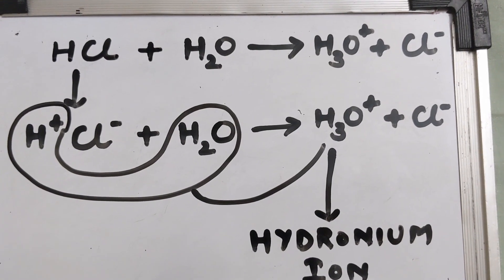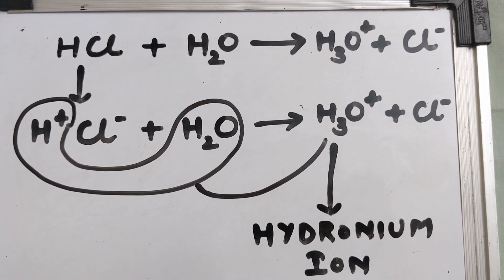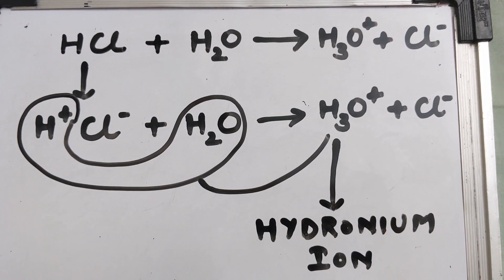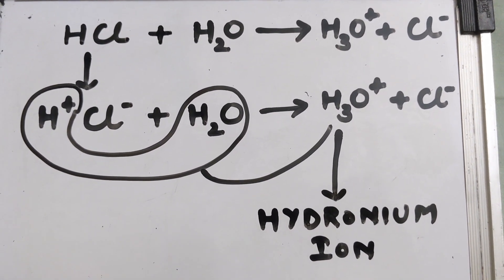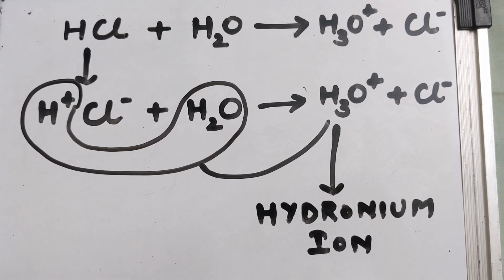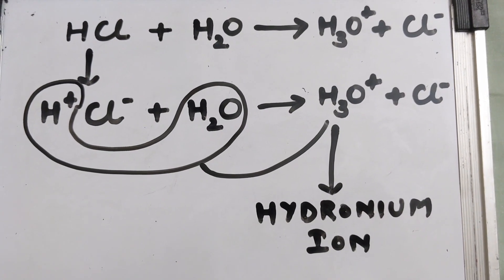So overall, if we were to write the equation of HCl with water, when we dissolve HCl in water, it forms hydronium ion H3O+ and chloride ion. HCl is formed of hydrogen ion and chloride ion. When we dissolve it in water, hydrogen ions from HCl combine with the water molecules and form hydronium ion H3O+ and chloride ions.